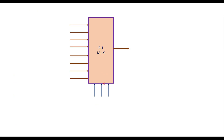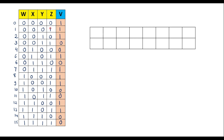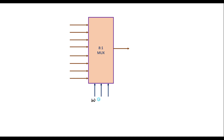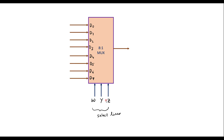This is the 8-to-1 MUX. Here we are supposed to consider w, y, z as select lines. These are the select lines and these are the data lines. We have 8 inputs. I will represent the data line variables as D0, D1, D2, D3, D4, D5, D6, and D7, and this is the output. We have 8 inputs and 3 select lines, using w, y, z as select lines.